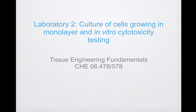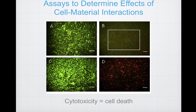Welcome to Laboratory 2: Culture of Cells Growing in a Monolayer and In-vitro Cytotoxicity Testing. In this lab, we're going to do a cytotoxicity assay, which is basically an assay for cell death. Cytotoxicity is one of the most basic concerns for developing new materials that house or contact cells, and is often the first step in determining whether a material is a viable candidate for any application within the body, including tissue engineering.